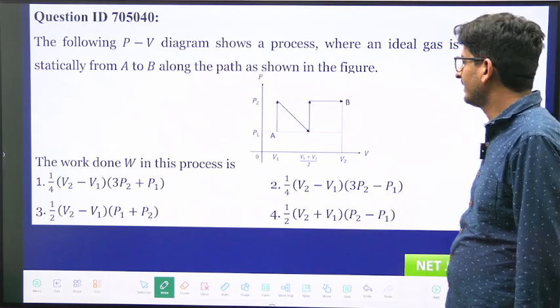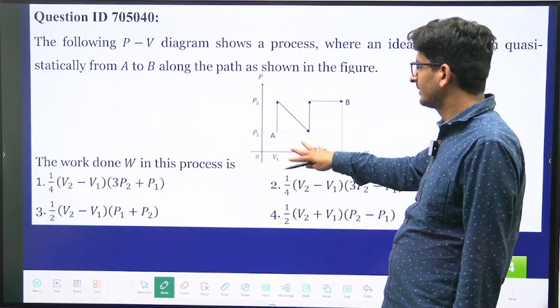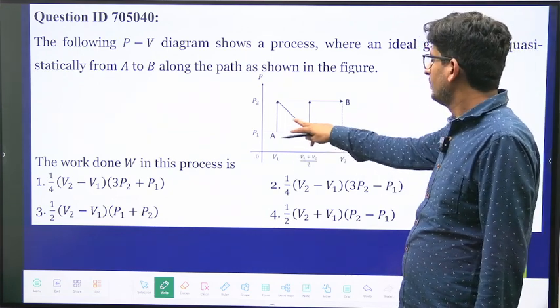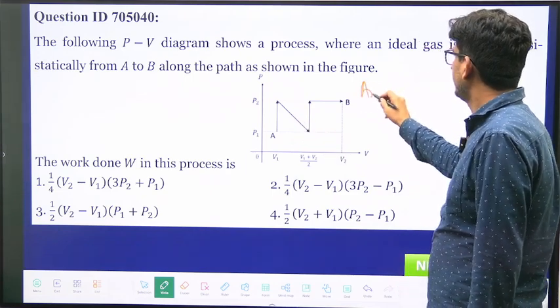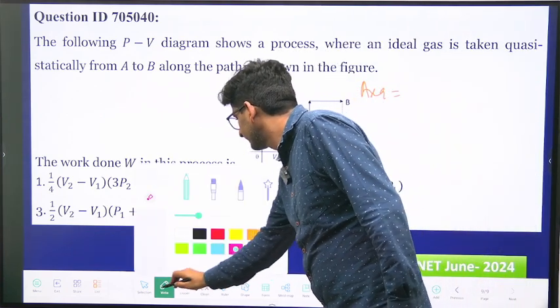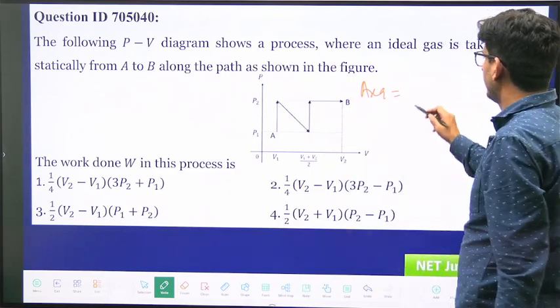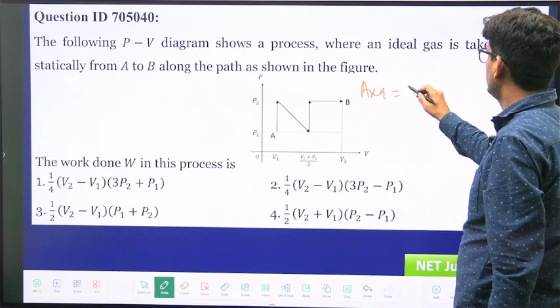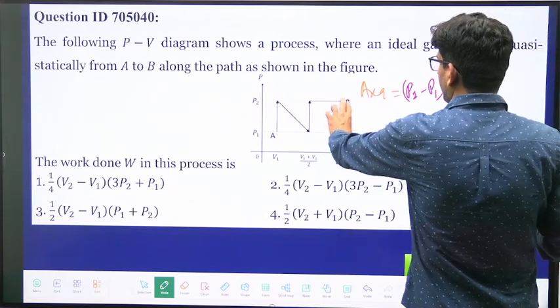So we have to just calculate the area under this curve. What is the area under this curve? The area is equal to - one is this square, its area is p2 minus p1 into...